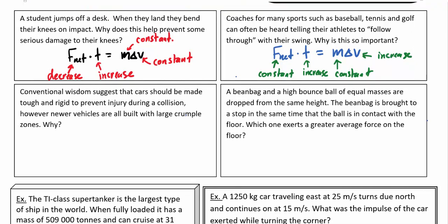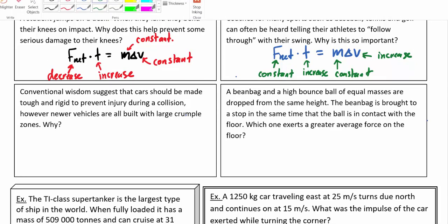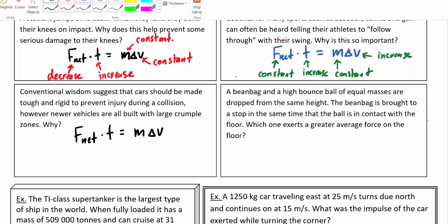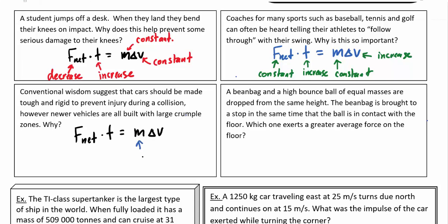Alright, let's talk about crumple zones. So, in a car, cars are actually built in such a way that if you get into a collision they're actually going to fold up in certain areas. Hopefully not in the area where you're sitting but the front and rear of the car should give a little bit, as opposed to being rigid. Previously, cars used to be built with really rigid frames and they're built in such a way that they wouldn't give under pressure. And so, if you imagine that you're inside a car, whether or not there's a crumple zone in the car, the mass of the car is going to be a constant. The change in velocity of you hitting something and coming to a stop is going to be constant.